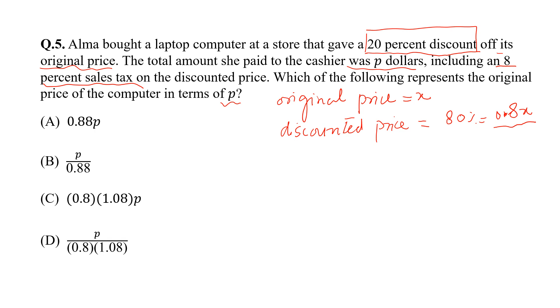Now the total amount she paid to the cashier, so the paid amount is P. And P also included 8% sales tax. So P is equal to this 80% of the original price plus 8% sales tax. So 8% sales tax on this price.